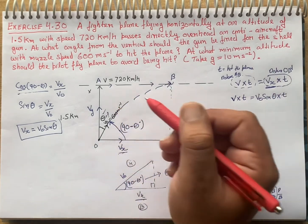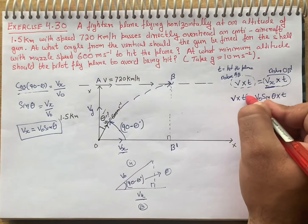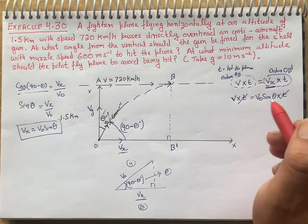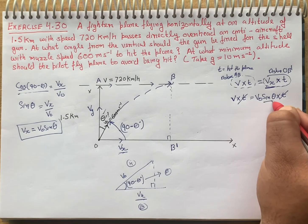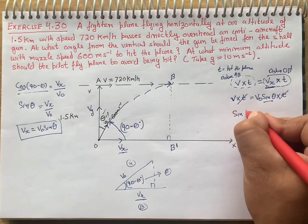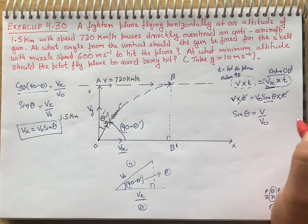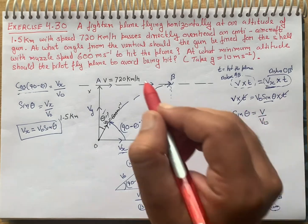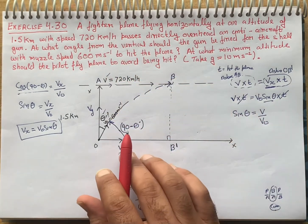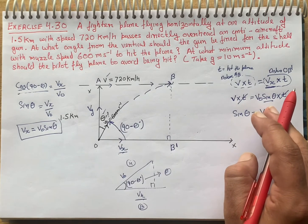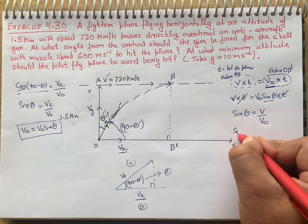We know that the time t is equal in both distances. So t cancels out from both sides. Now we can say that sin theta is equal to v upon V0, because only two velocities were known to us — v and V0 — in this question. That's why we converted it to v/V0. So now let's substitute the values.